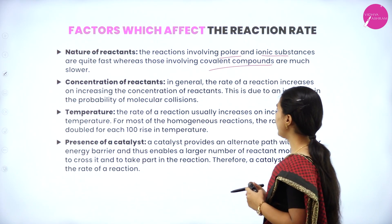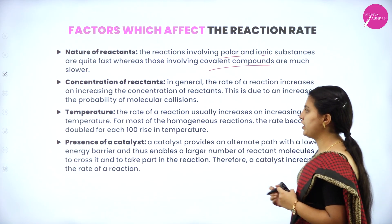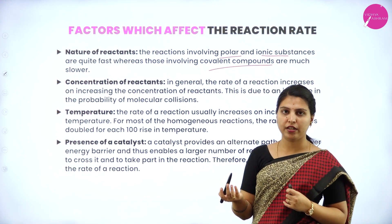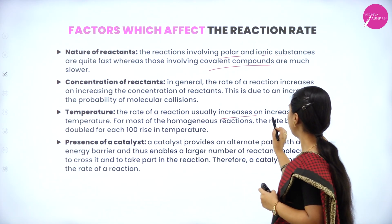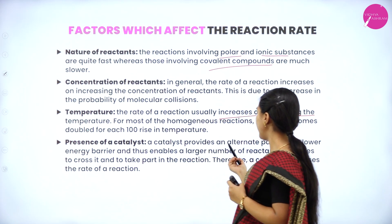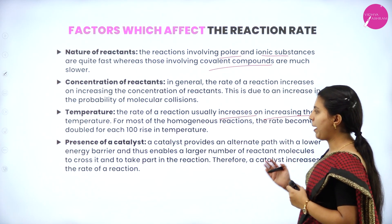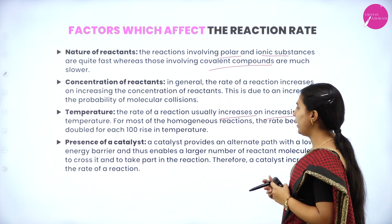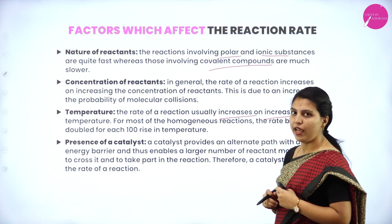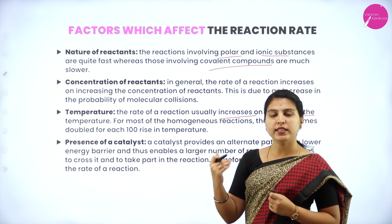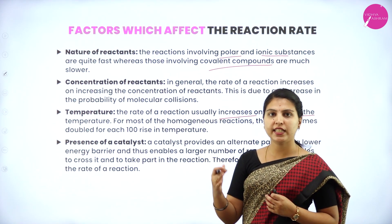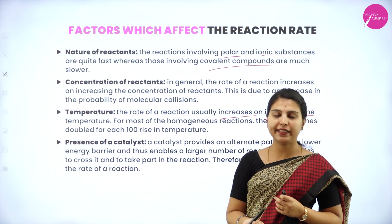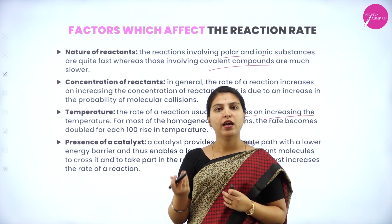Regarding temperature: the rate of reaction usually increases with increasing temperature. For most homogeneous reactions, the rate becomes double for each 10°C rise in temperature. Regarding the presence of catalyst: a catalyst provides an alternate path with a lower energy barrier, enabling a larger number of reactant molecules to cross it and participate in the reaction, thereby increasing the rate. A catalyst is a substance which alters the rate of reaction without changing its own state. These are the four major factors which affect the rate of a reaction.